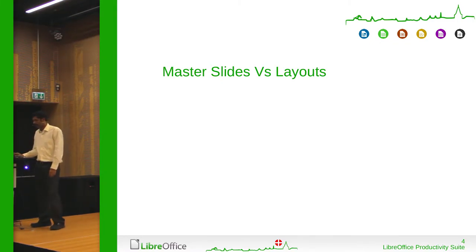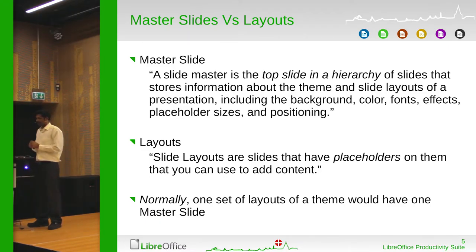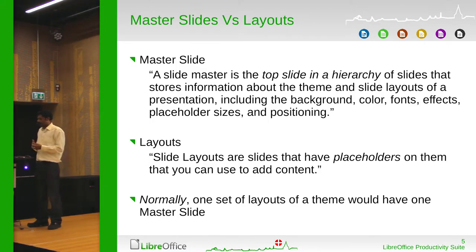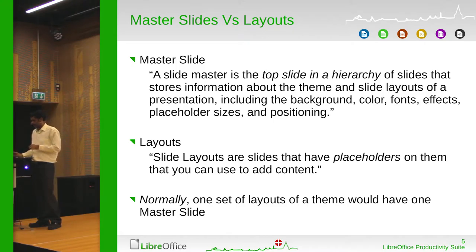Starting with master slides. A master slide is the top slide in the hierarchy of slides that stores information about themes, slide layouts, etc. The most important point is around the kind of look the slide is storing — the color, background colors, fonts, effects, etc. The slide layers are more to do with the placeholders on them. So it's like you have a master slide and then you have different layers where you can place your text. Normally one set of layers of a theme will have one master slide.